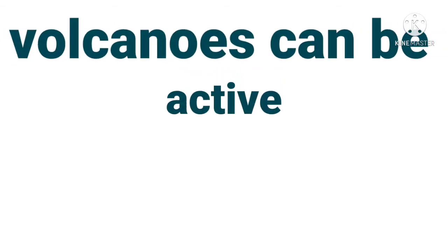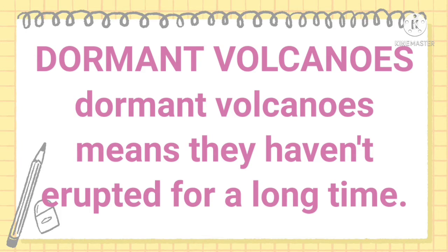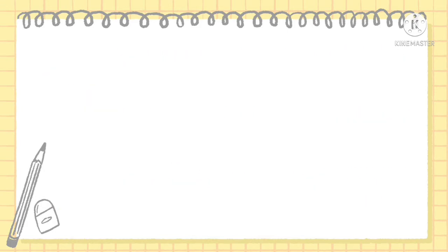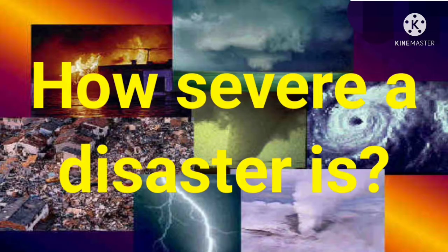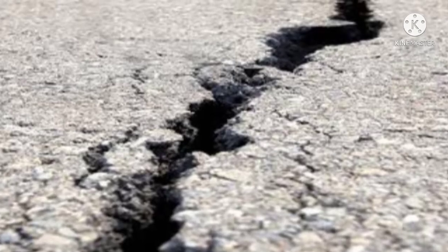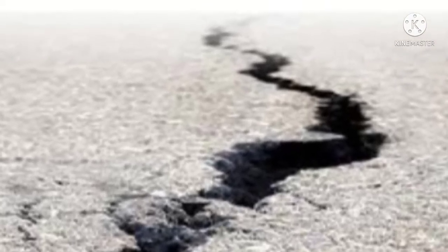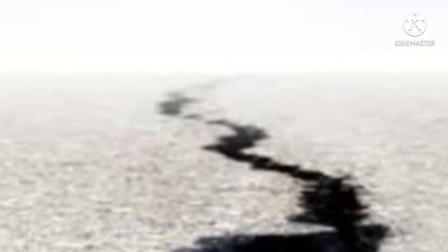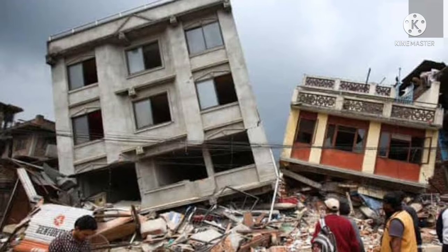Volcanoes can be active, dormant, or extinct. Active volcanoes erupt regularly. Dormant volcanoes have not erupted for many years, although there is still some activity deep inside and they may erupt in the future. Extinct volcanoes are no longer active and are not expected to erupt again. How severe a natural disaster is depends on our interactions as humans with our environment — a strong earthquake can be completely overlooked if it happens in an unpopulated area, but a similar event in a densely populated metropolitan area can cause many deaths, injuries, and destruction of property.